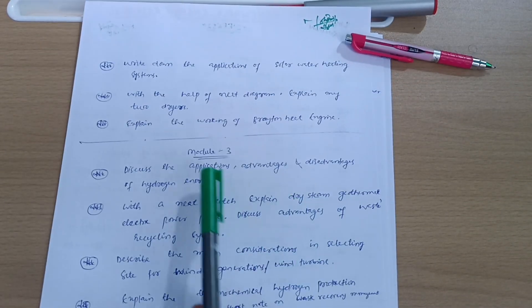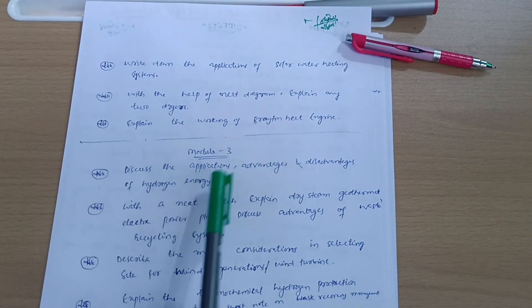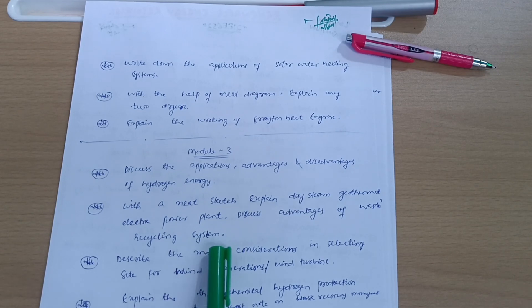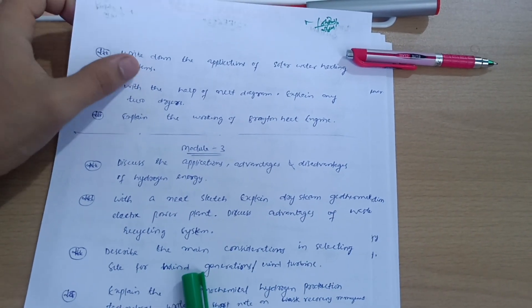Now Module 3: Discuss the applications, advantages, and disadvantages of hydrogen energy. With a neat sketch, explain dry steam geothermal electric power plant. Discuss advantages of waste recycling system and discuss the main considerations in selecting site for wind generations or wind turbine.